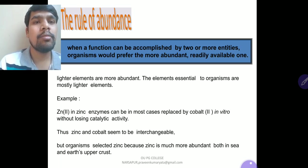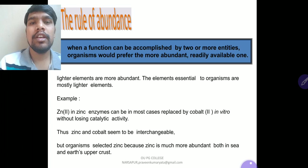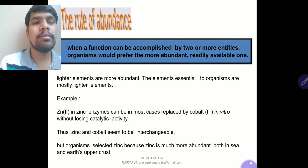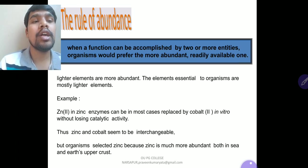For example, zinc-2 in zinc enzymes can, in most cases, be replaced by cobalt-2 in vitro without losing catalytic activity. Thus, zinc and cobalt-2 seem to be interchangeable. But the organism selects zinc because zinc is much more abundant both in seawater and in the earth's upper crust.